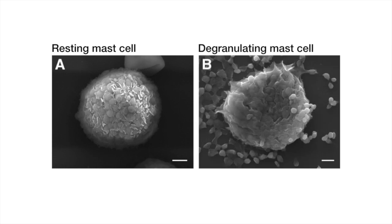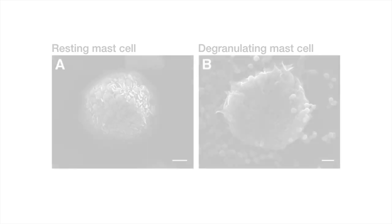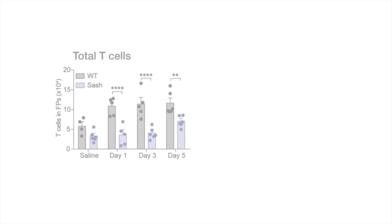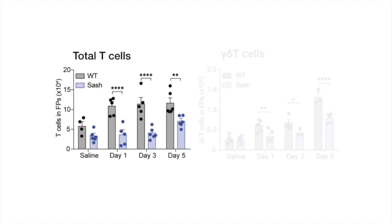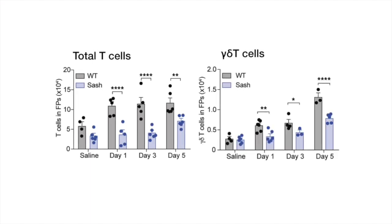We started this project with the question of how mast cells are able to promote protection from viral infection in the skin. One of the first observations we made was that mast cells trigger the recruitment of many different subsets of T-cells into the skin, and of those T-cells that were recruited, the fastest responding were Gamma-Delta T-cells.